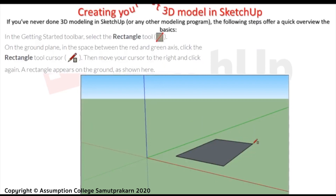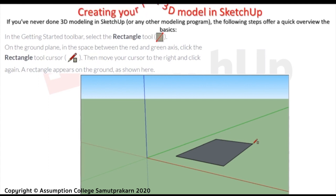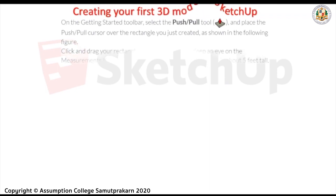Now let's try to create your first model — a 3D box. If you have never done 3D modeling in SketchUp or any other modeling program, the following steps offer a quick overview of the basics. In the Getting Started toolbar, select the Rectangle Tool. On the ground plane, in the space between the red and green axis, click the Rectangle Tool cursor, then move your cursor to the right and click again. A rectangle appears on the ground.